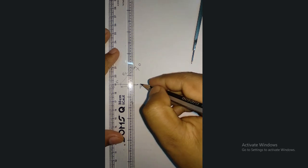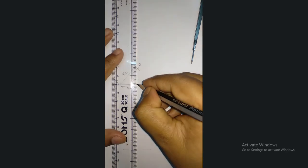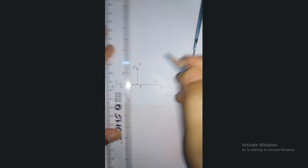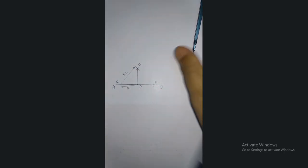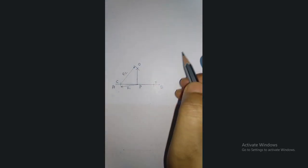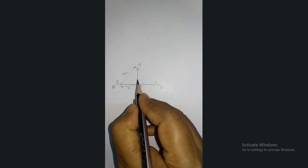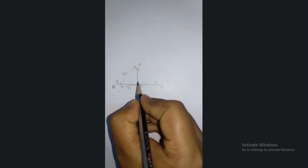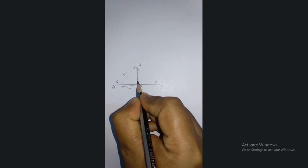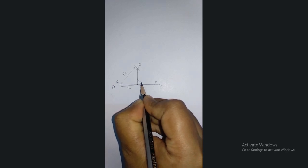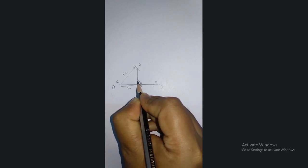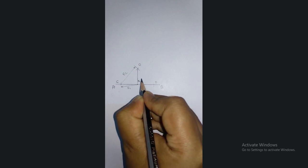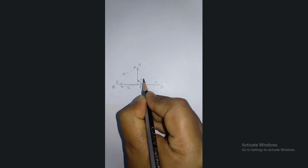Now you have to draw the line. This is my main line, that's why I have to use this HB pencil. You can see that it is perpendicular. This angle is now your 90 degree angle.